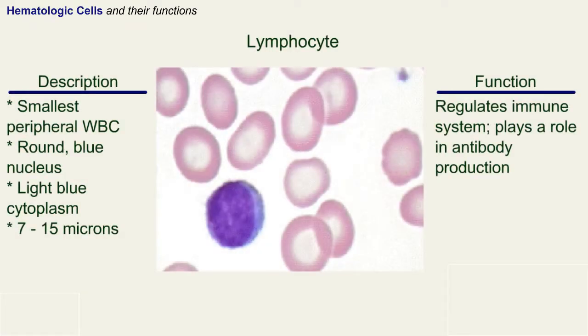Lymphocytes are the smallest peripheral white blood cell. They have a round blue nucleus with light blue cytoplasm and are 7 to 15 microns in diameter. A lymphocyte regulates the immune system and plays a role in antibody production.